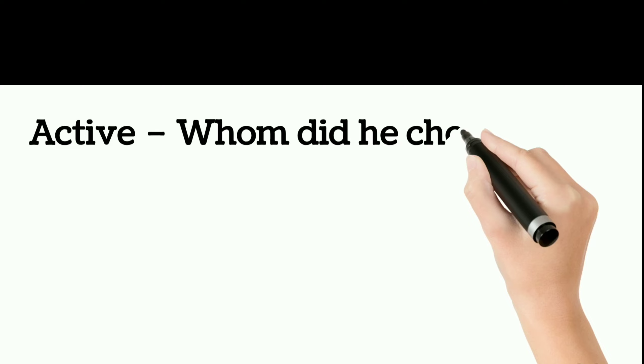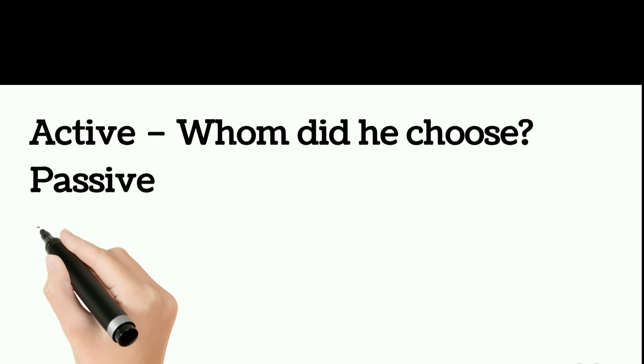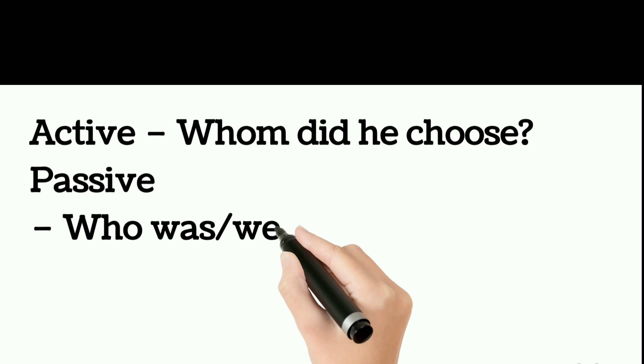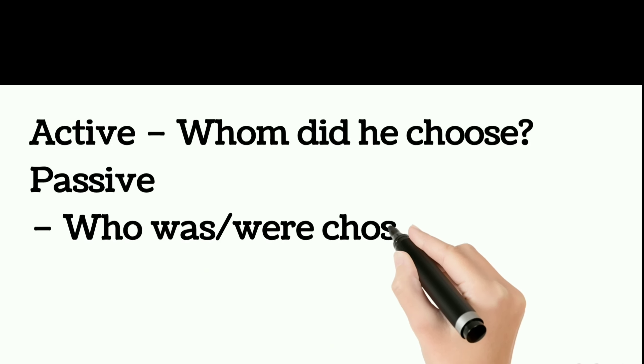Active voice: whom did he choose. Passive: who is/were chosen by him.